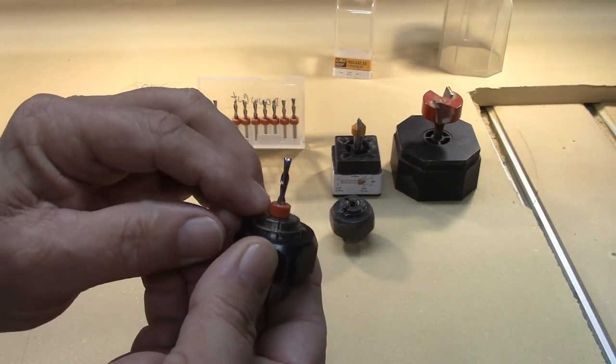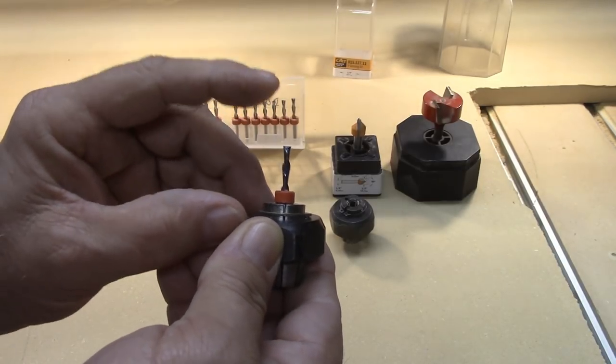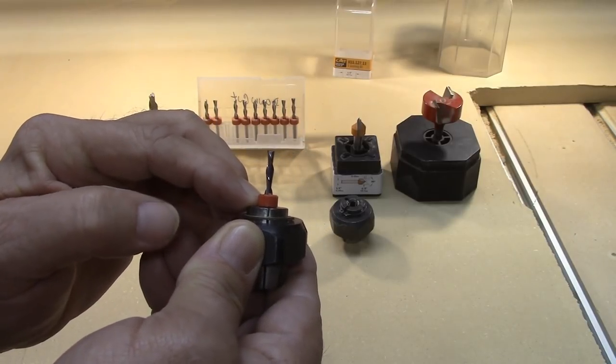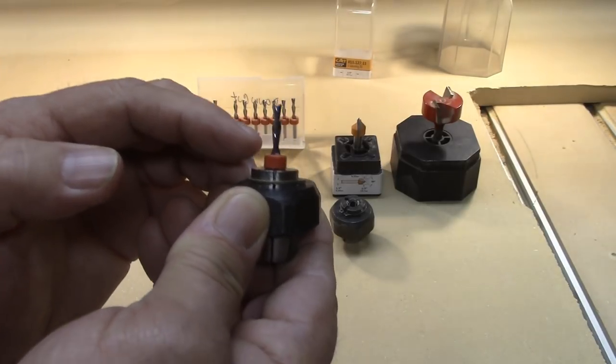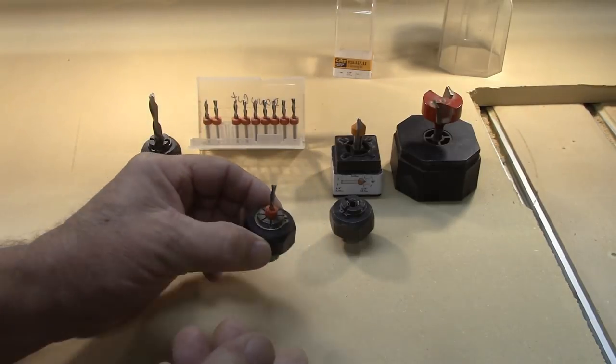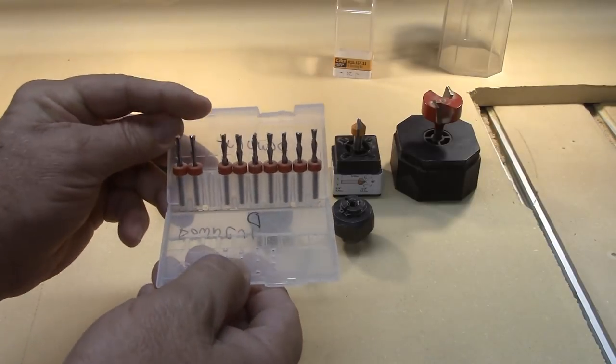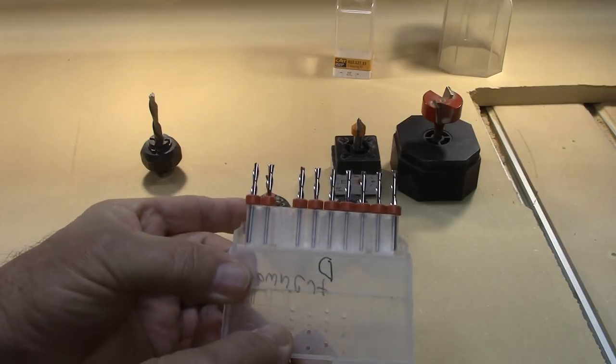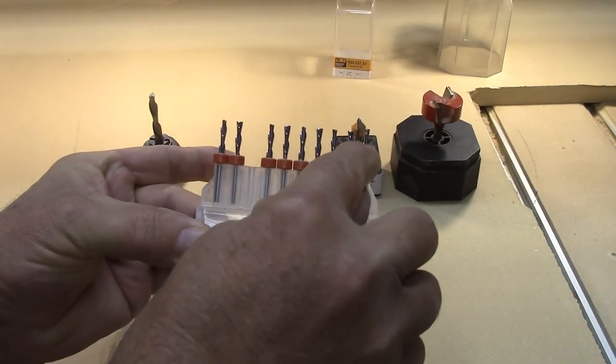Now, some folks will tell you that these collars here are pressed a specific distance down the shank of the bit so that you don't have to reset your zero after a bit change. And I disagree with that statement. The only evidence I have to support my disagreement is if you look at this pack of 10 bits, you can see that the amount of bit exposed past this collar varies. They're not all standardized.